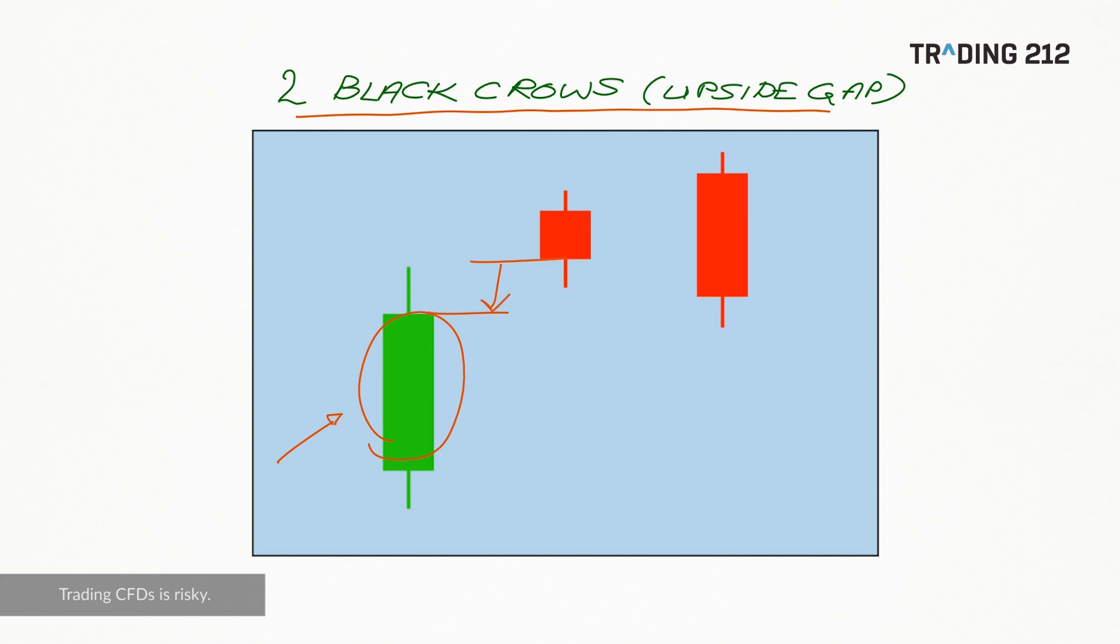which then crucially has this gap between it and the next candle, which is a red candle, and then this is followed by a second red candle. So these are our two black crows here.